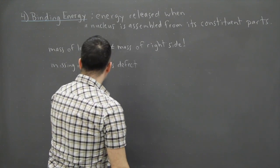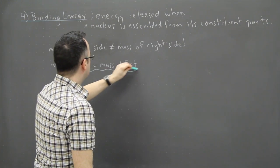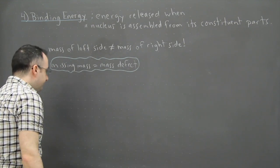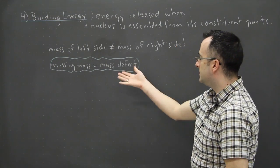So this mass that you don't really see around there, that's called the mass defect. Okay, that's the key thing here. So there's going to be some mass missing, we call it mass defect.